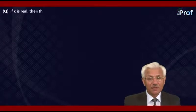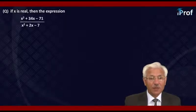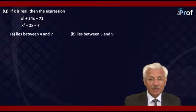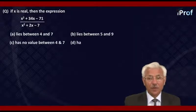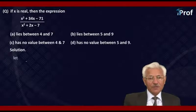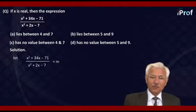Next question is: if X is real, then the expression (X squared plus 34X minus 71) divided by (X squared plus 2X minus 7) — does it lie between 5 and 7, has no value between 4 and 7, or has no value between 5 and 9? Let this expression equal to M.